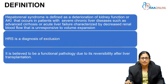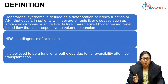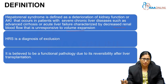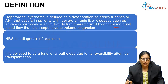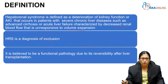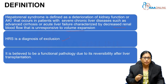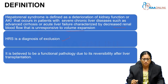The main problem here is decreased renal blood flow. It is somewhat similar to pre-renal failure, but one major difference is this is unresponsive to volume expansion, unlike pre-renal azotemia or pre-renal acute kidney injury. This is the definition: deterioration of renal function either in acute liver diseases or in chronic liver disease, but we see it more commonly in cirrhotic patients. HRS is the diagnosis of exclusion — you need to exclude other causes of acute kidney injury, and it is believed to be a functional pathology.